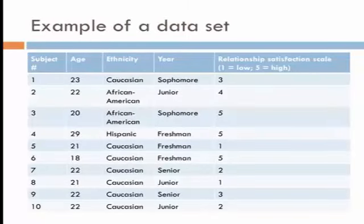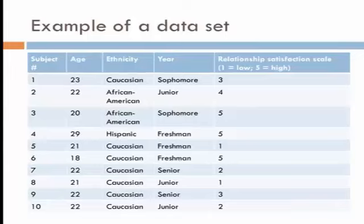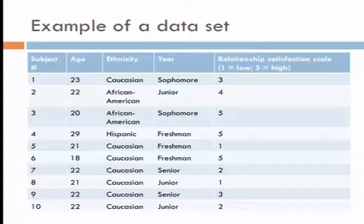You would typically set up a data set where you give a name to and describe the variables in the top row. If it is a Likert-type scale, you want to put in parentheses what low numbers mean and what high numbers mean. You could also code year, ethnicity, and other variables and put those codes in parentheses or underneath the variable name. You would at least need to keep a codebook to determine how you're coding Caucasian, African-American, Hispanic, and how you're coding year in school.